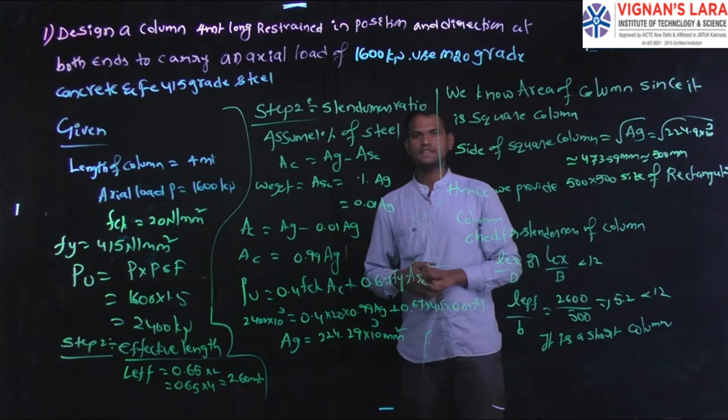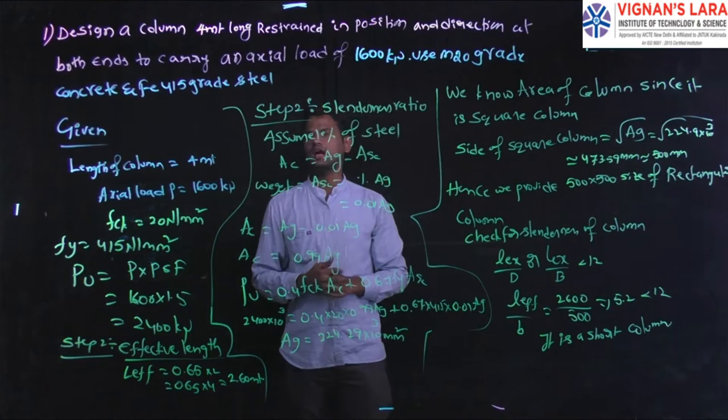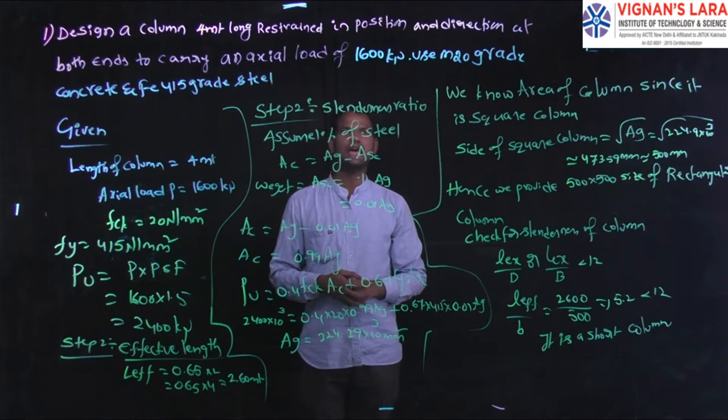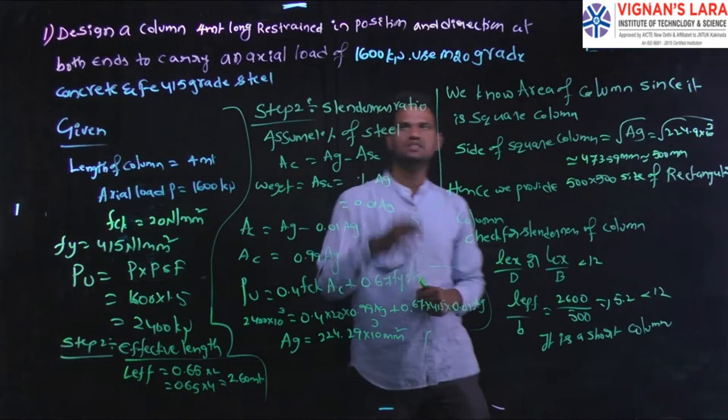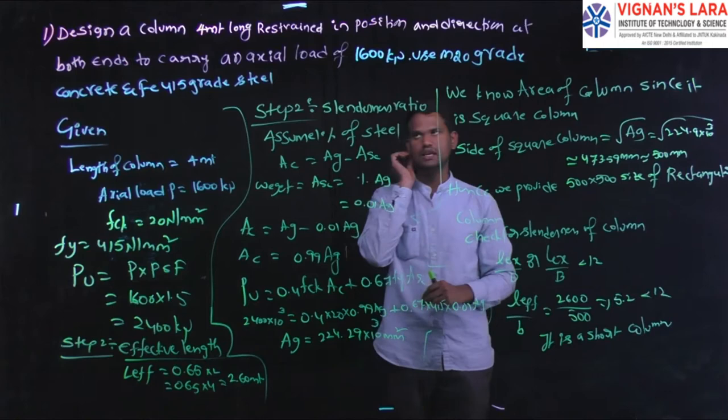Next we are having one more design problem based on codebook IS456 and SP60 chart. The problem: design a column four meters long, restrained in position and direction at both ends, to carry an axial load of 1600 kilonewton. Use M20 grade of concrete and FE415 grade of steel.